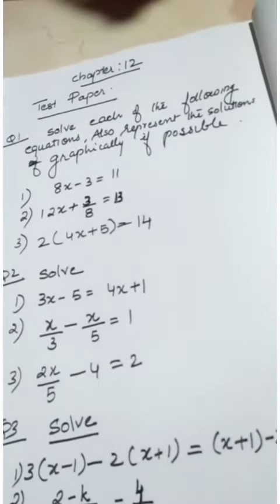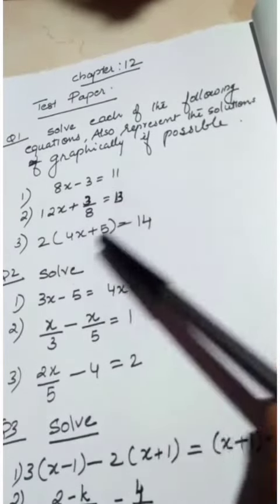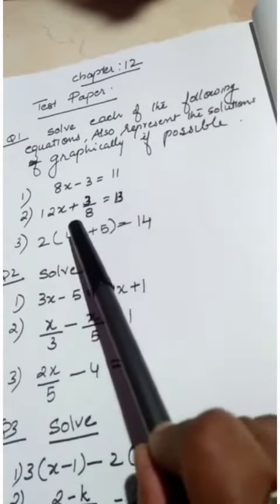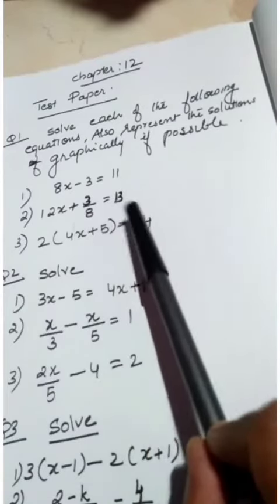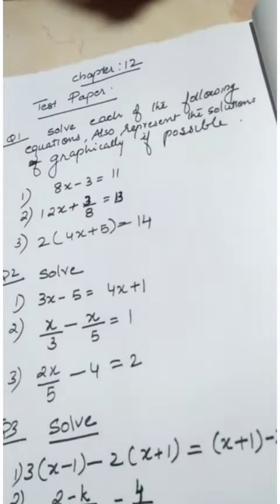Solve each of the following equations. Also represent the solution graphically if possible. 1) 8x minus 3 equal to 11. 2) 12x plus 3 by 8 equal to 13. 3) 2 into 4x plus 5 equal to 14. Okay.